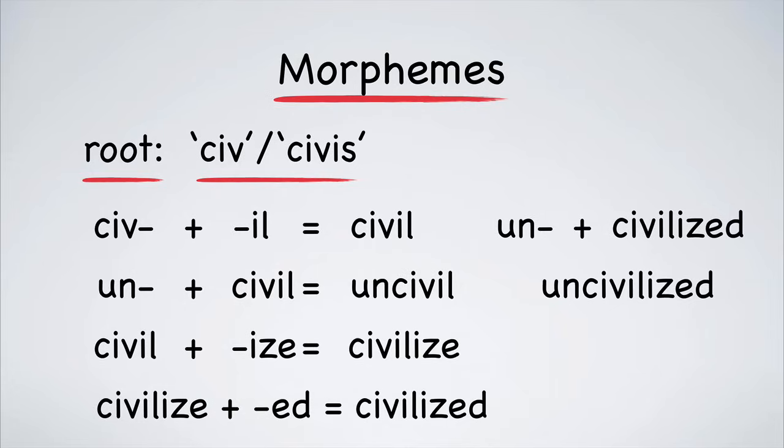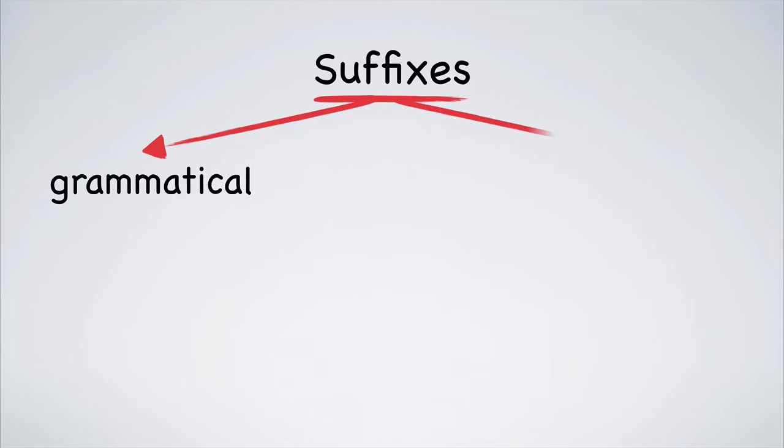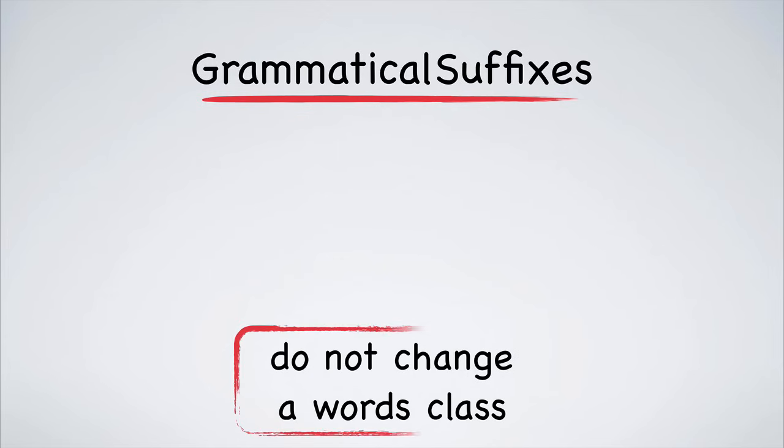Let's slow down for a minute. There are actually two kinds of suffixes: grammatical and derivational. First we'll look at grammatical suffixes. Grammatical suffixes do not change the class of a word, so they will not change a verb to an adjective or a verb to a noun. They simply add grammatical information.